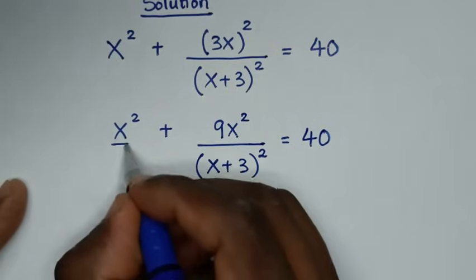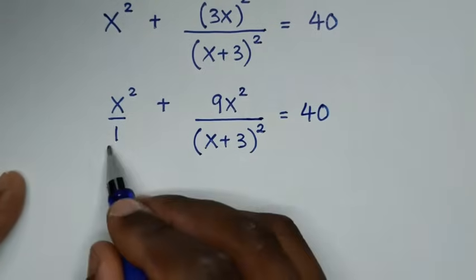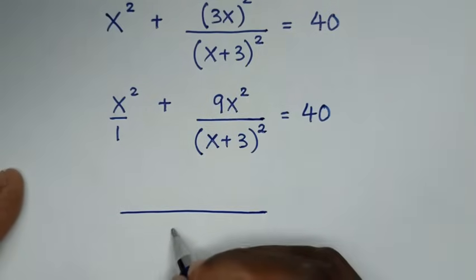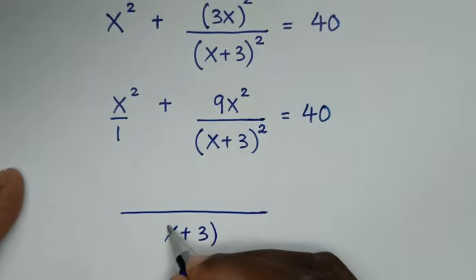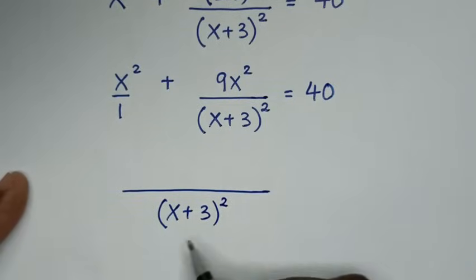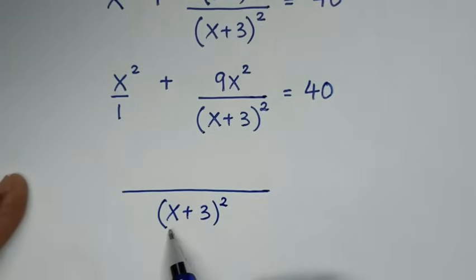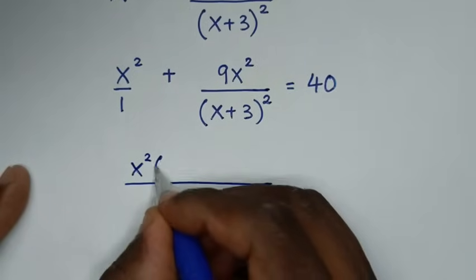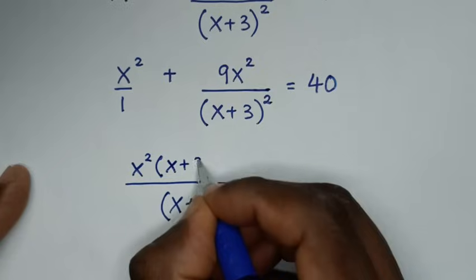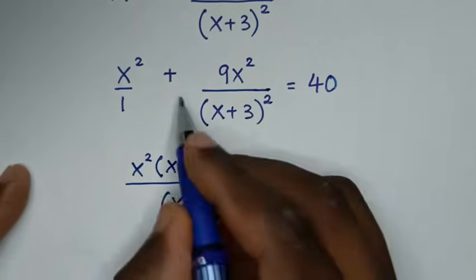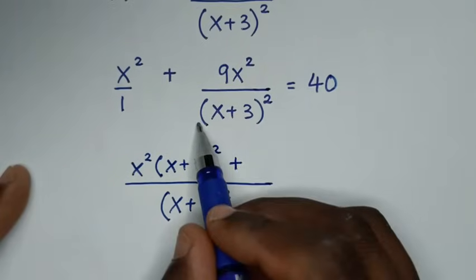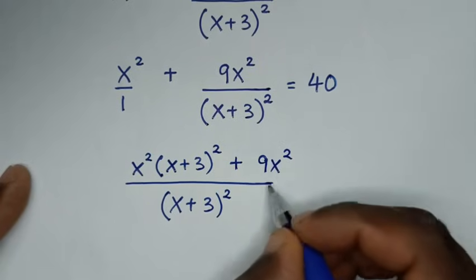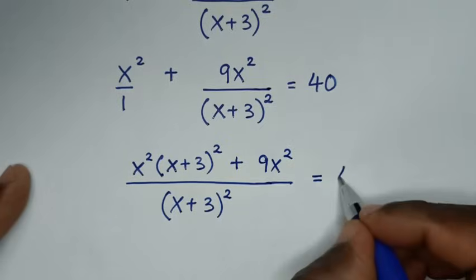Now, x squared is the same as x²/1. So there is a common denominator of 1 and (x+3)². We cross-multiply: (x+3)² times x² plus (x+3)² divided by (x+3)² gives 1, so 1 times 9x² is 9x squared. The expression equals 40.